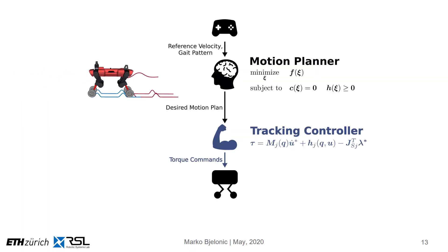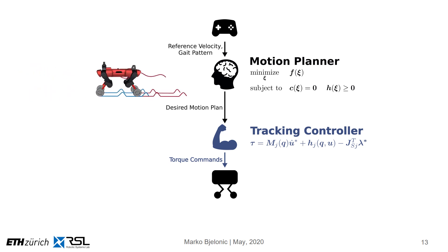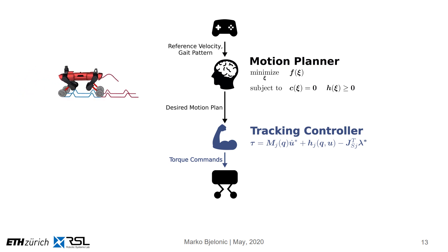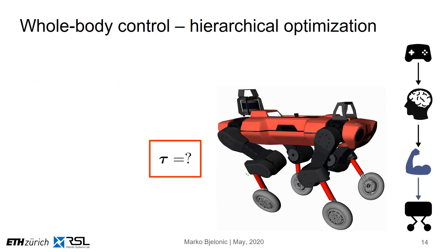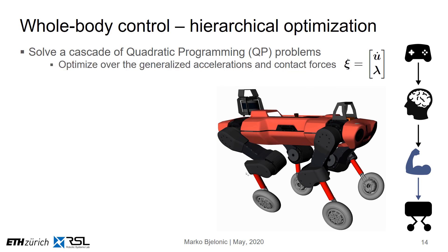Given these trajectories, the next question is how are we able to track them, and more specifically, how are we able to send commands to the robot? The real robot consists of 16 motors that need to be coordinated to achieve highly dynamic motions. What we are really concerned about is generating the vector tau, which captures all 16 joint torques sent to the real robot. For this, we use a whole-body controller based on hierarchical optimization. We solve a cascade of quadratic programming problems, optimizing over generalized accelerations U-dot and contact forces lambda. We describe the dynamics of the robot with equality and inequality constraints defined as tasks.